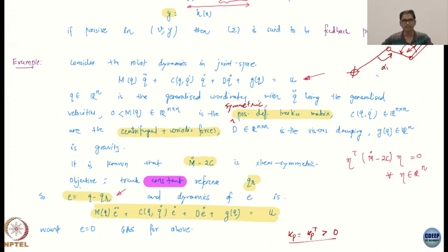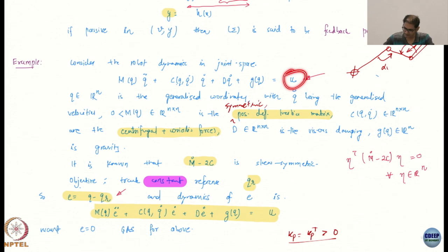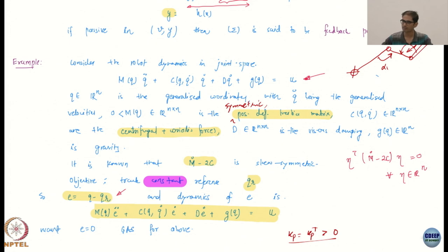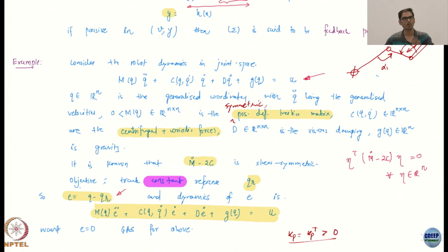This is the nice thing — this model encapsulates a lot of different systems. The control is on the right-hand side; typically you will see the control as motors mounted on the joints for angular motion, or linear actuators for linear motion. So the control is typically a torque or a force.